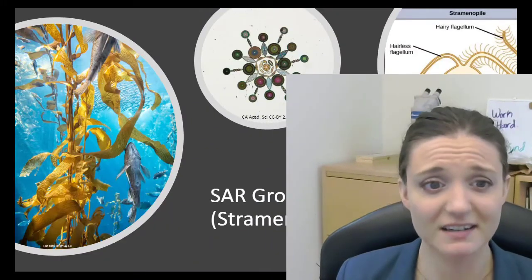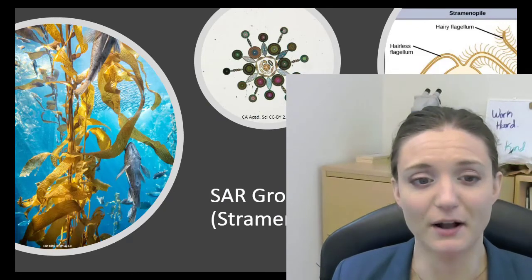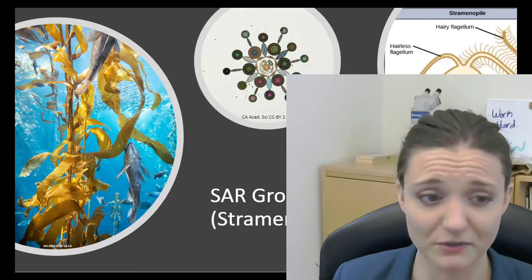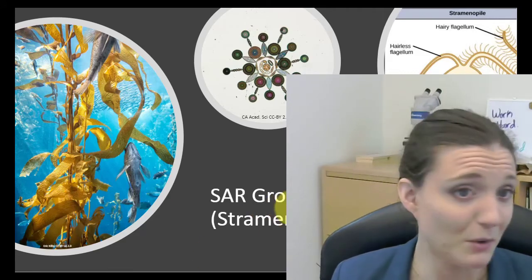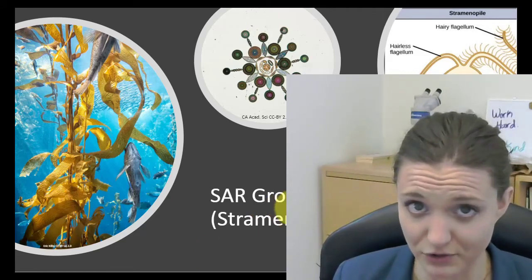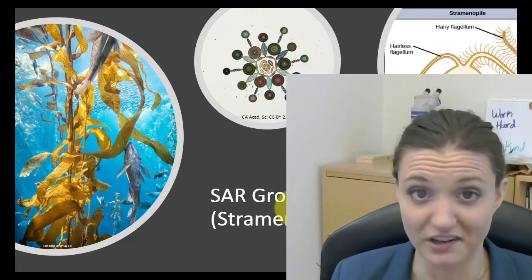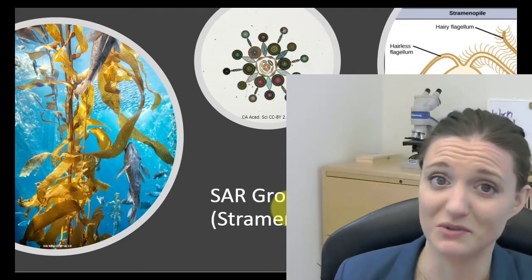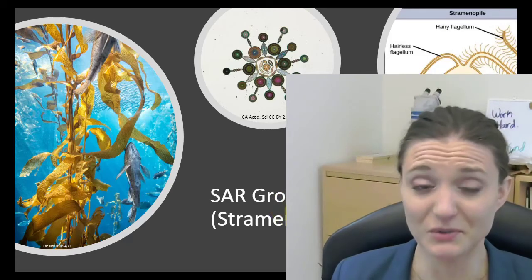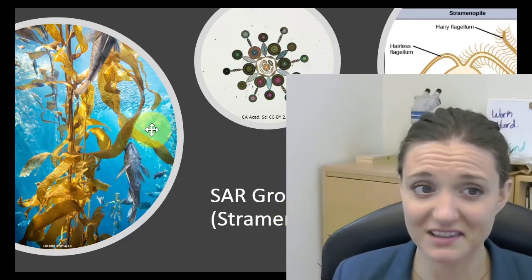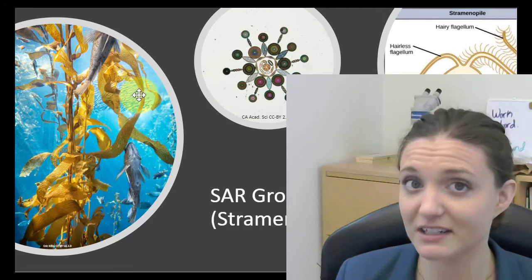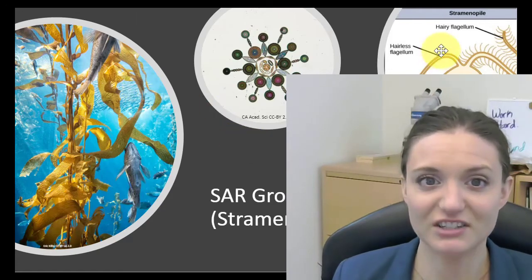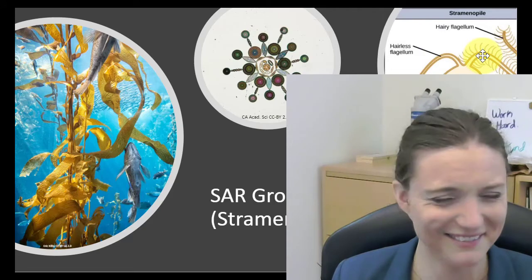The SAR group - stramenopiles, alveolates, rhizaria - is a super important group of protists. It contains most of the primary producers that are part of the aquatic food chain and produce most of the oxygen on our planet. So they feed the oceans and produce most of the oxygen - not to be ignored. There's lots of diversity here. These organisms have chloroplasts that are the result of secondary endosymbiosis, and one of their other characteristics is that they have two flagella, one of which is kind of hairy.